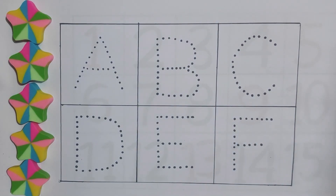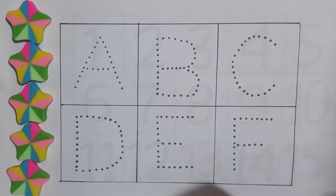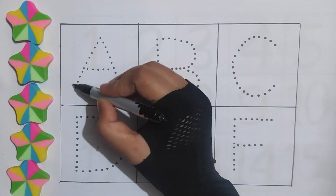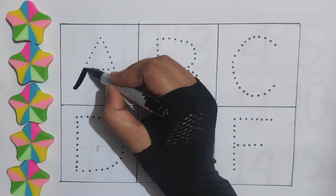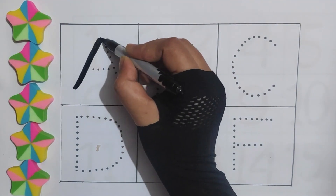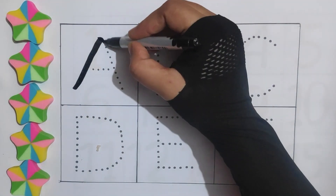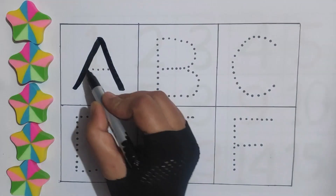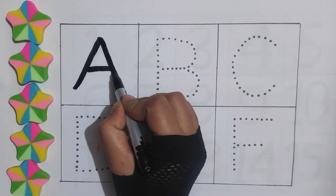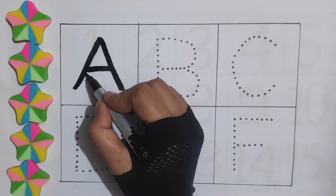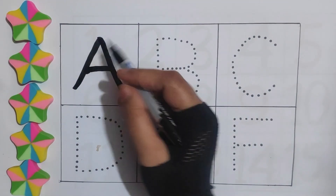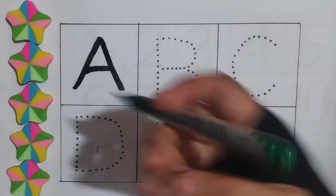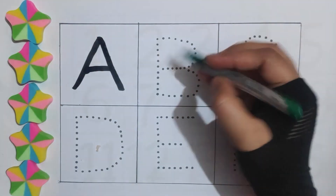Black color. A. A for apple. A. A for ant. Green color.